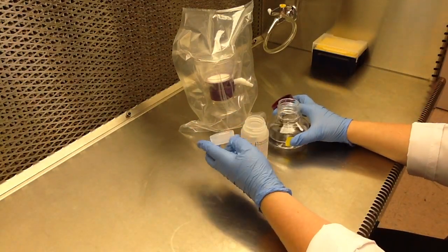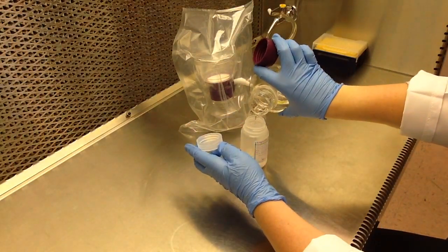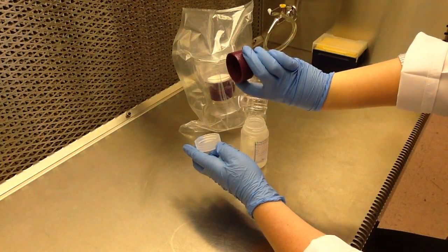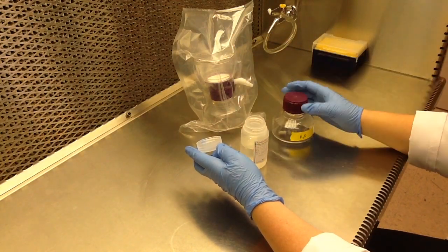So first, I'll be adding the volume of double distilled water that's necessary to the bottle. Here, I had it pre-measured according to the instructions on the front side of the bottle.